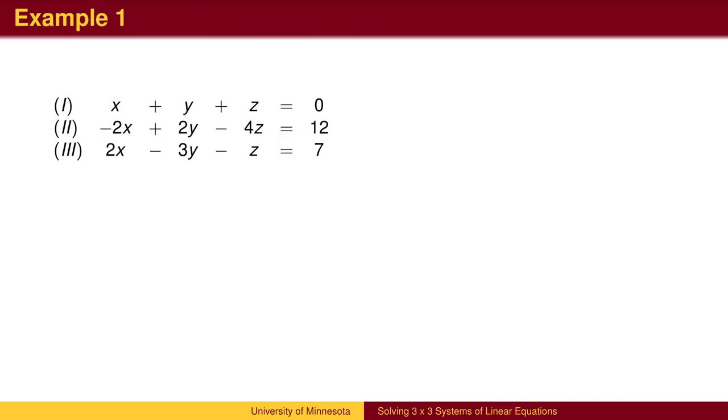For example, we could solve this system in many ways. One approach is to eliminate z. We could add the first equation and the third equation to get an equation involving x and y. We could then take four times the first equation with the second equation to get another equation involving x and y. We could then solve this system.